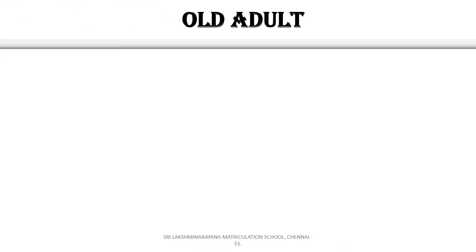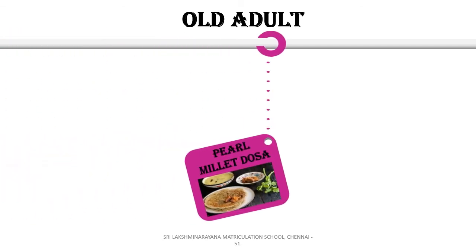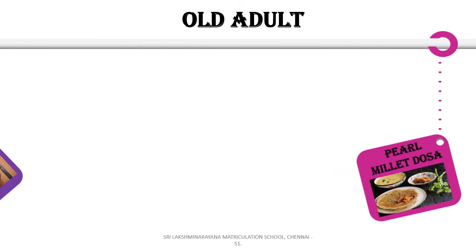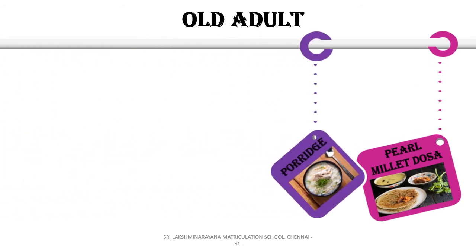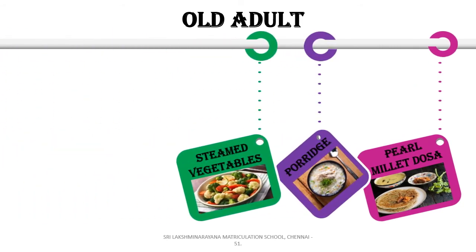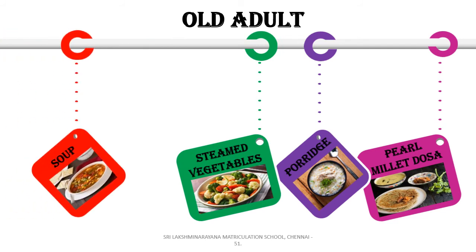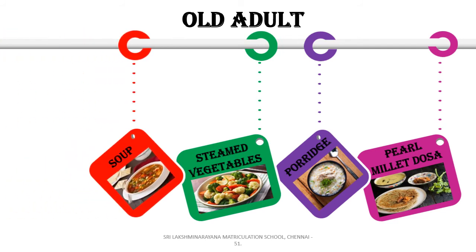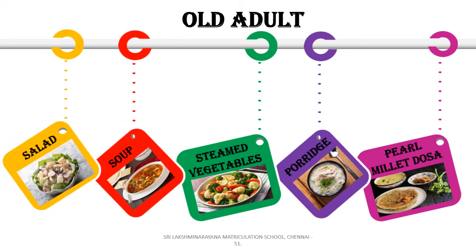Finally, old adults or old people consume easily digested food like millet dosa, porridge, steamed vegetables, soup, and salads.